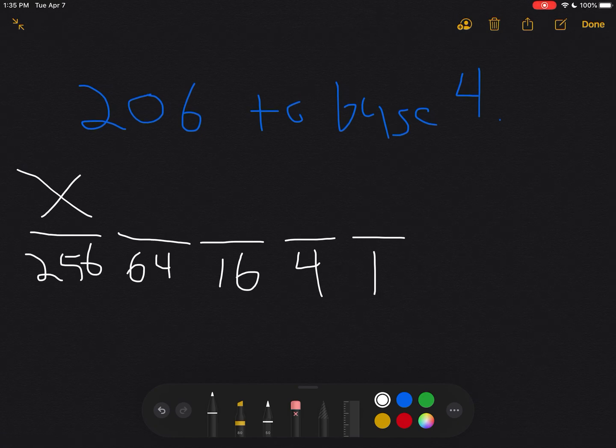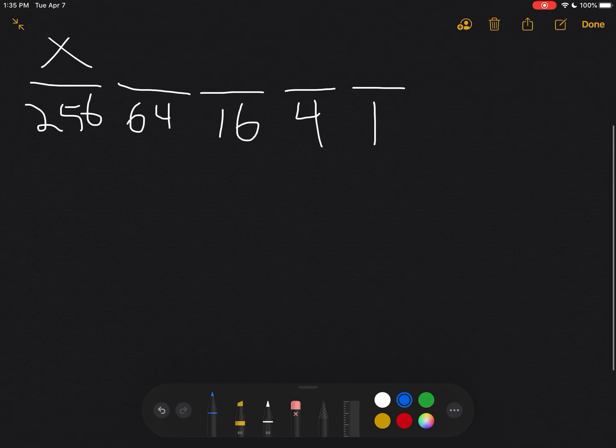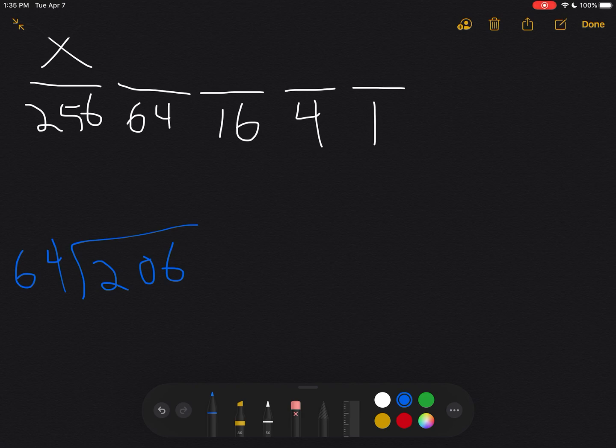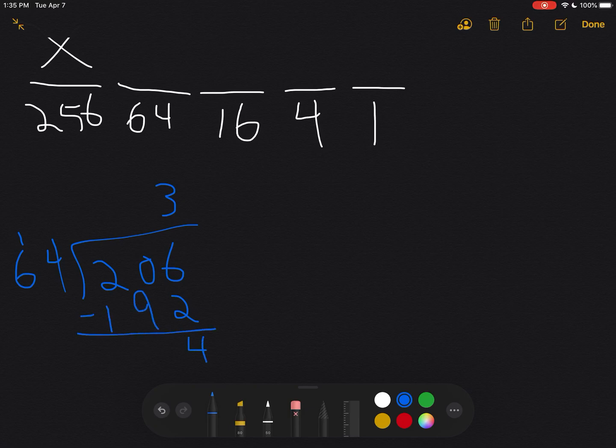So I want to build 206 out of these place values. The first thing to do is figure out how many times does 64 go in there. So I'm going to take 206 and divide it by 64. That happens to go in there three times. See, three times 64, three times four is 12, three times six is 18 plus one is 19. And then I subtract, this is a four, I have to borrow, so 14. So I get three remainder 14.